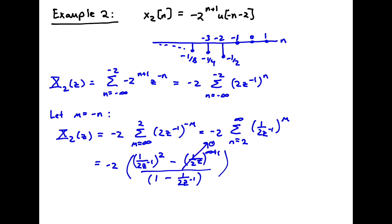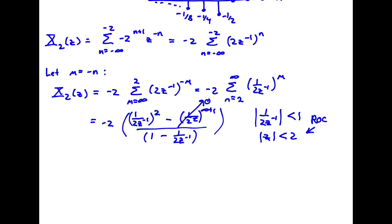This term goes to 0 so long as the absolute value of 1/(2z^(-1)) is less than 1, or |z| less than 2 after rearranging. That's the ROC. In that case, the divergent term goes to 0, and we're left with minus 2 times (1/2z^(-1))^2 over 1 minus (1/2z^(-1)).